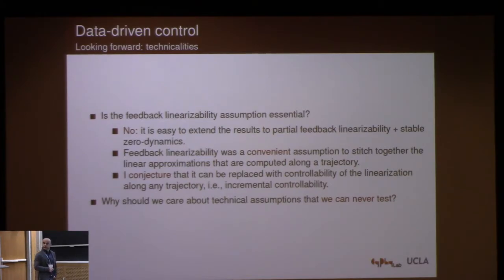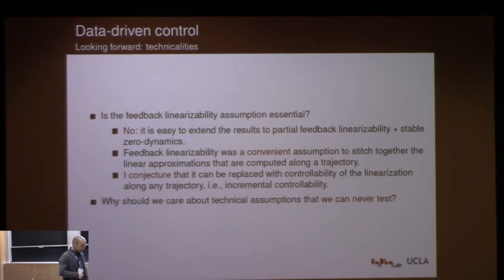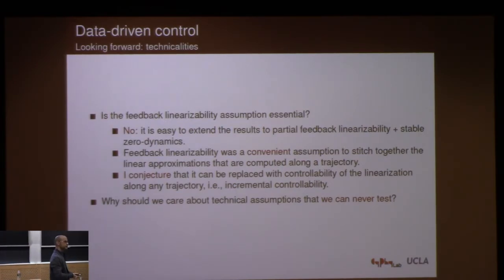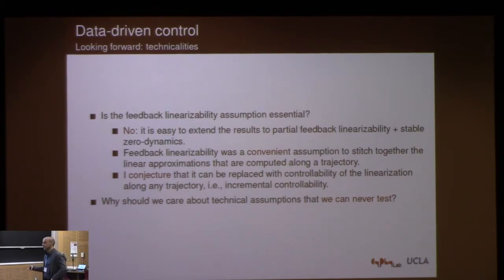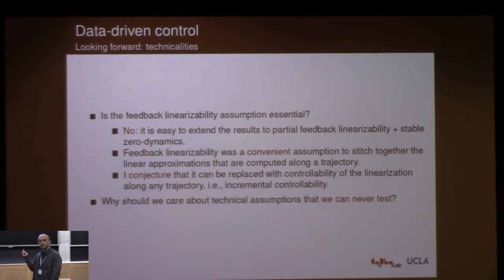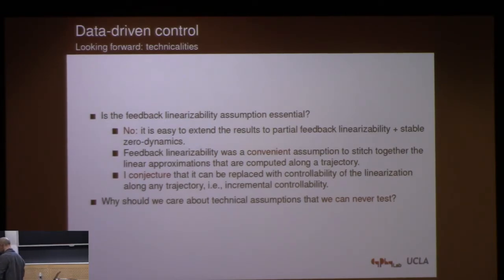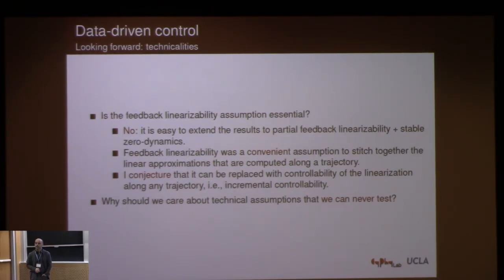Here's a question to think about: you're worried about assumptions like feedback linearizability and whether this will be a large enough class of systems. But this is a technique that lets you control a system for which you don't have a model. So how can you go and check your assumptions? If you don't know the model, how can you check if the model is feedback linearizable? What's the point of worrying about placing assumptions on your theorem when you're never going to be able to verify them in practice?